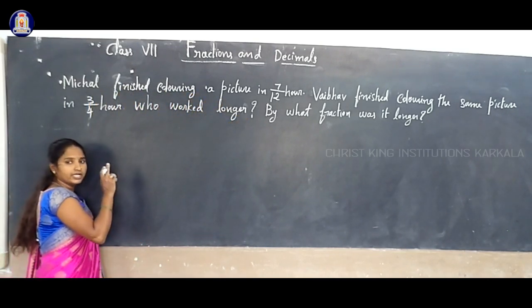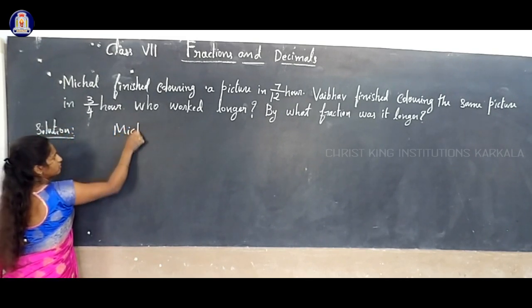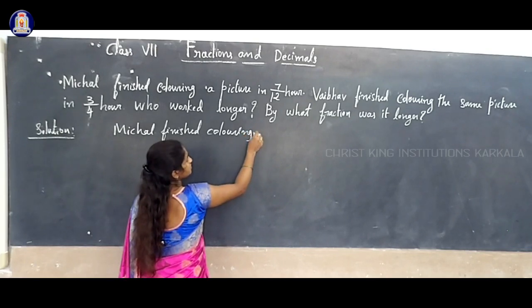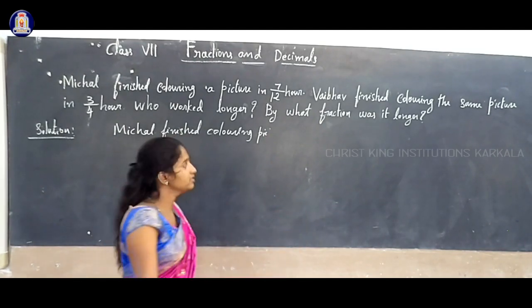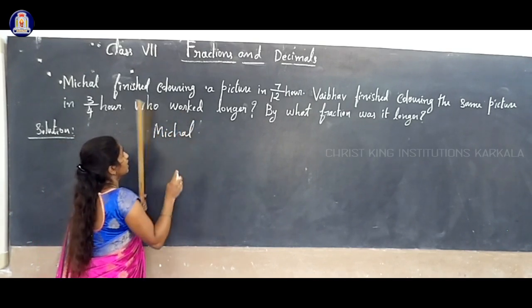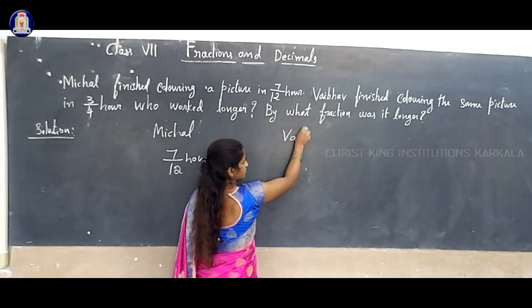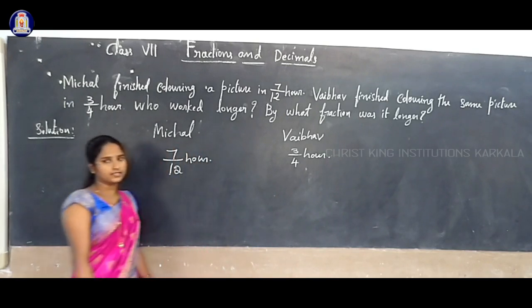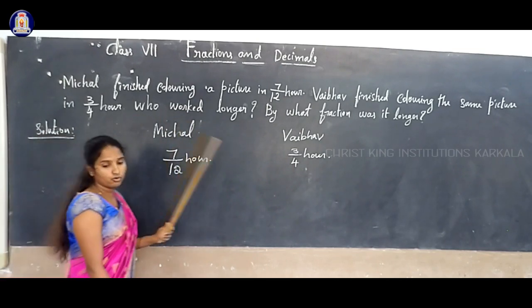Michael finished coloring a picture in 7/12 hour. We can compare directly now. Waibo finished coloring the same picture in 3/4 hour. Both are in fraction form: 7/12 hour and 3/4 hour. Now, who worked longer?